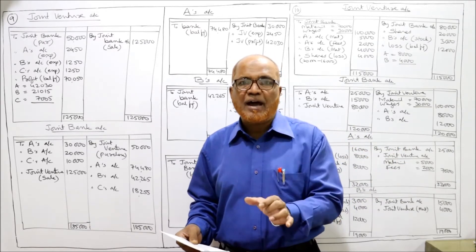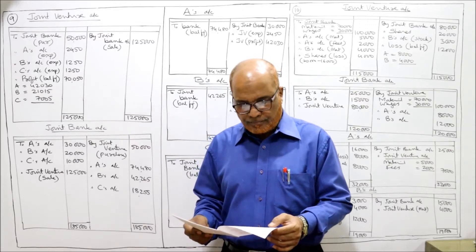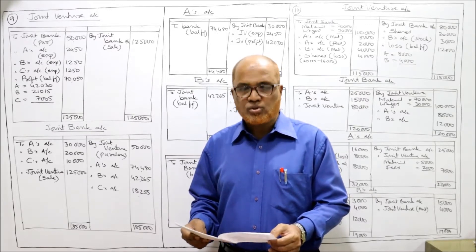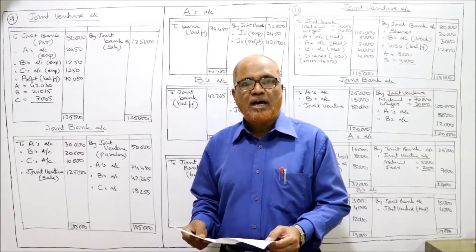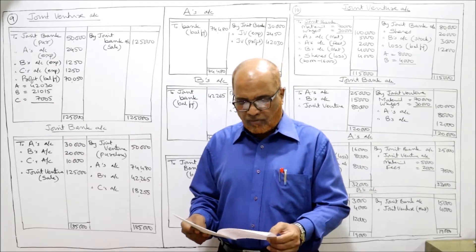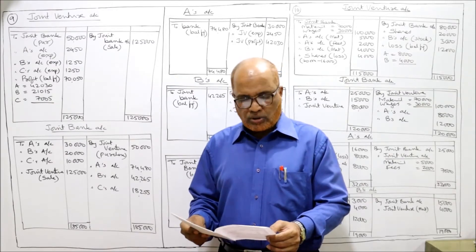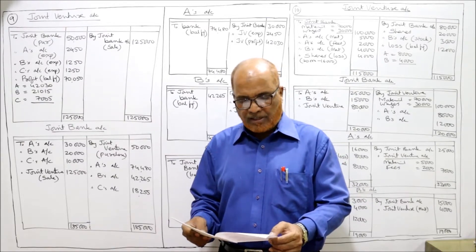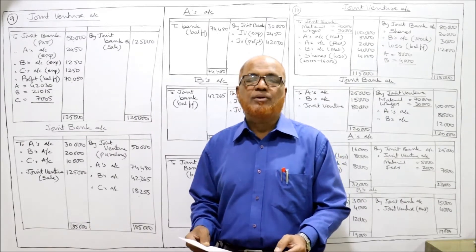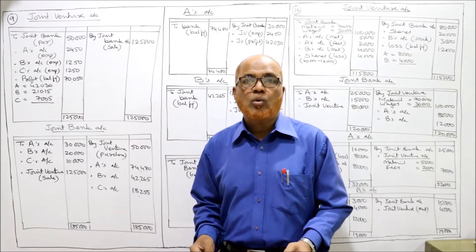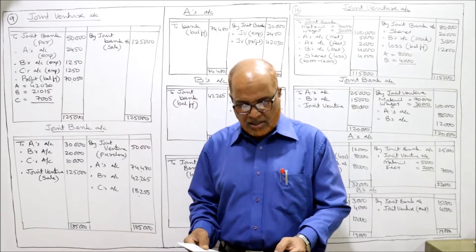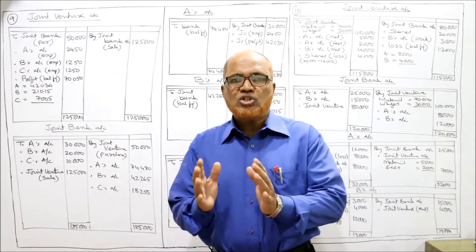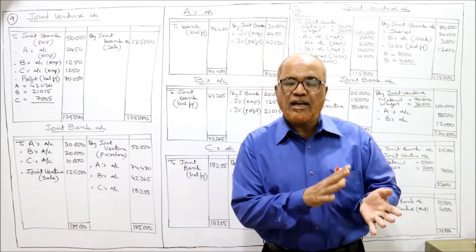A joint bank account is opened. They sold all the machines for Rs. 1,25,000 - they purchased for 50,000 and sold all for 1,25,000. A spent Rs. 2,450 and B and C spent Rs. 1,250 each in connection with the venture. These are the expenses incurred by co-venturers. Show the joint venture account and other ledger accounts.